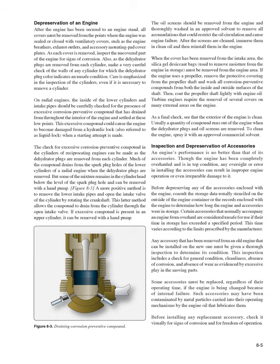Much of the compound drains from the spark plug holes of the lower cylinders of a radial engine when the dehydrator plugs are removed. Some mixture remains below the spark plug hole level and can be removed with a hand pump. A more positive method is to remove the lower intake pipes and open the intake valve by rotating the crankshaft, allowing compound to drain through the open intake valve. If excessive compound is in an upper cylinder, it can be removed with a hand pump. The oil screens should be removed and thoroughly washed in an approved solvent, then immersed in clean oil and reinstalled.